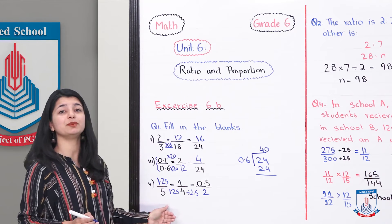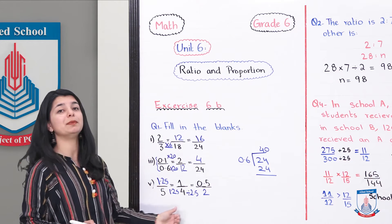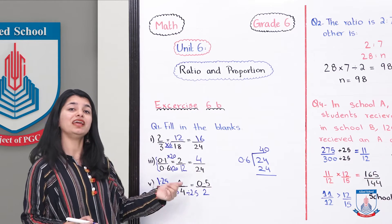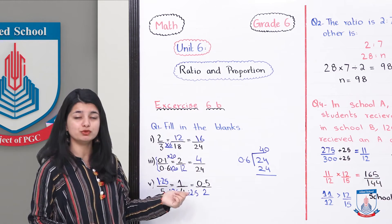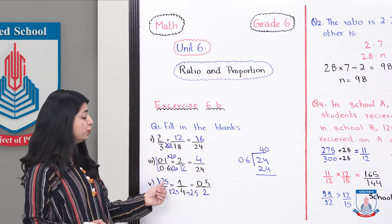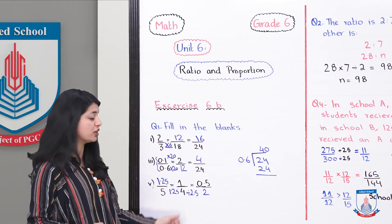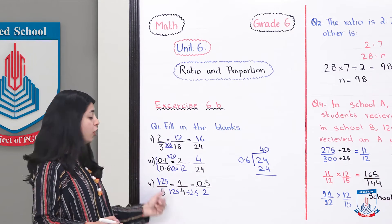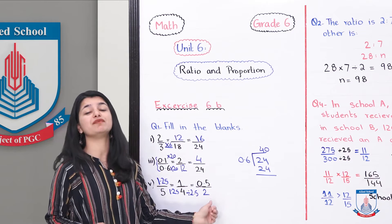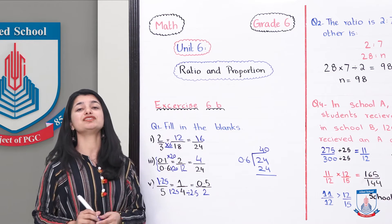When you divide 1.25 by 2.5, the answer is 0.5. So here also you have to divide 5 by 2.5. And when you divide 5 by 2.5, you will get 2. In this way, you filled in that blank as well. You have determined the relationship. Whatever relationship the denominator has, you use the same relationship for the numerator. In this way, we know it's 1.25 over 5. When we divided both by 1.25, we got 1 over 4. And then when we divided both by 2.5, we got 0.5 over 2. With that, question number 1 is done.